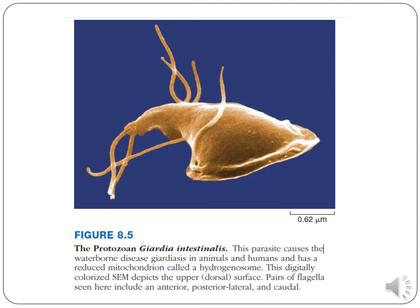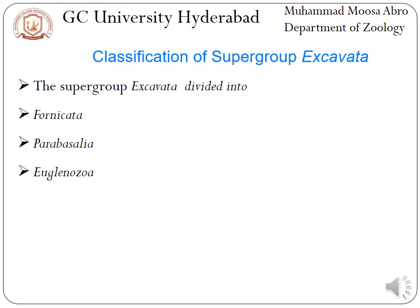An important example of this group is Giardia intestinalis. The supergroup Excavata is further divided into three groups: one is known as Fornicata, second is Parabasalia, and third is Euglenozoa. We will now discuss each group one by one.